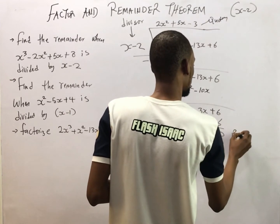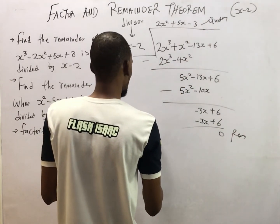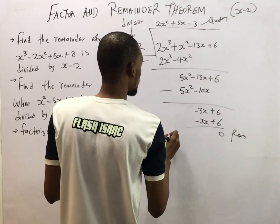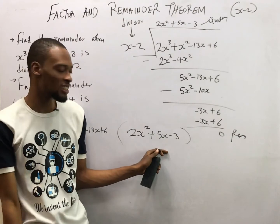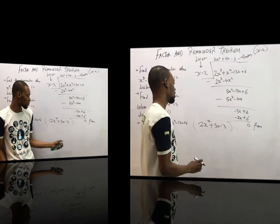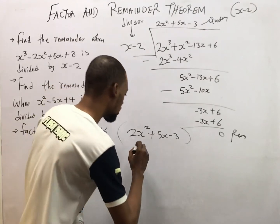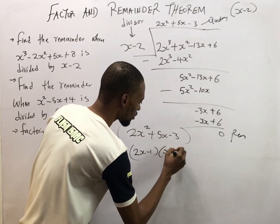Quotient and remainder. So bringing this out. So you see. So this is a quadratic equation already. So from quadratic equation, we are sure of getting two factors. Factorizing this, you get 2S minus 1 times S plus 3.